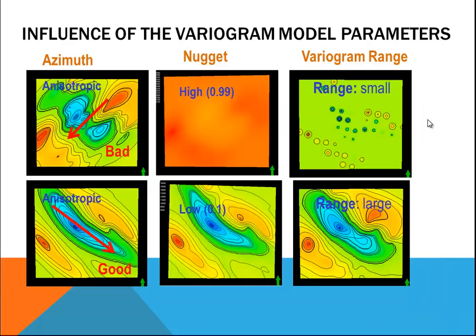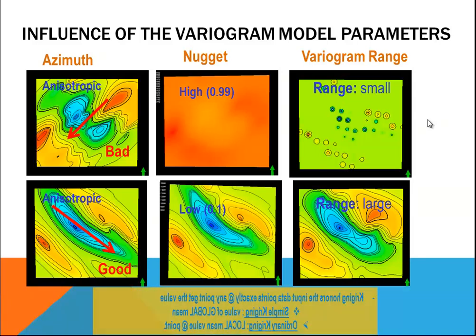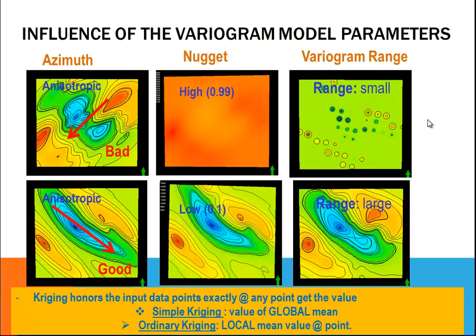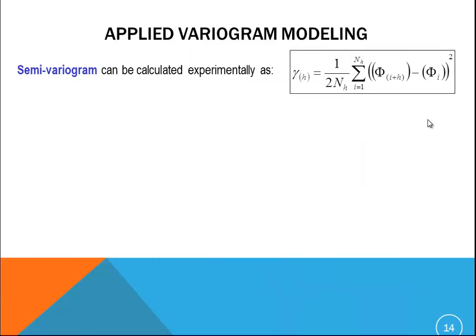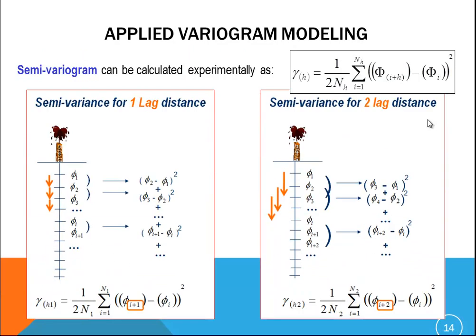Eventually, the effects of variogram on famous geostatistical method of kriging. Semi-variance equation for lag distance H.